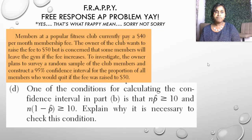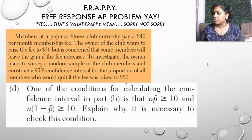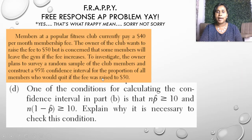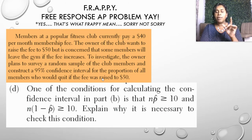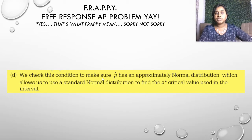Moving on to question D. One of the conditions for calculating the confidence interval in part B was checking our conditions — specifically that N times P-hat is greater than or equal to 10. But why is it necessary to check this step? We checked this condition to make sure that P-hat has an approximately normal distribution, which allows us to use a standard normal distribution to find the Z critical values used in this interval.